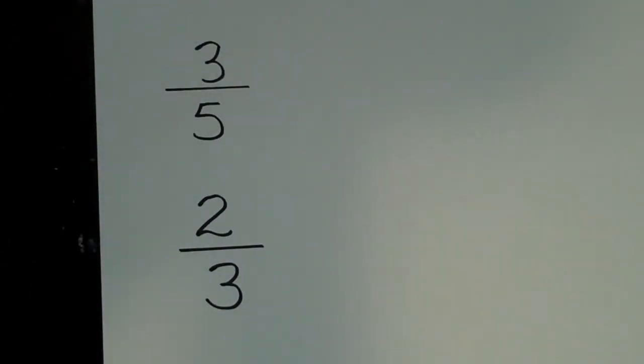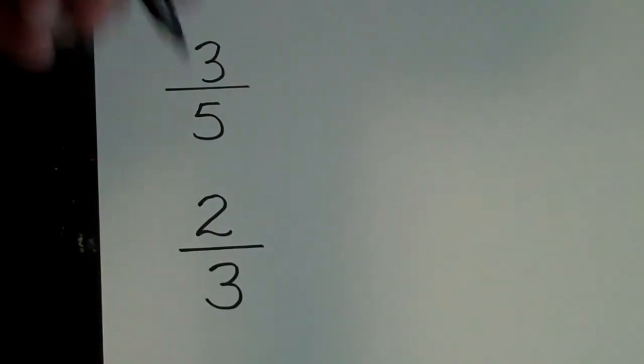Or simply, what number—and it doesn't have to be the smallest number, but it's easier if you do pick the smallest number. So we would call that the least common multiple. What is the least common multiple of 5 and 3?